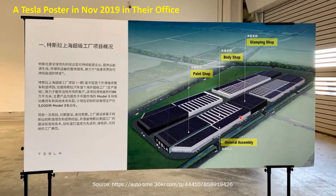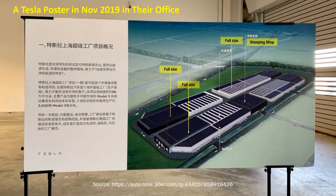There are some interesting details in this poster. They have a very big stamping shop with no similar buildings elsewhere, implying it is a central stamping unit that will serve more than one factory — and that it would be built in phases. This has actually been confirmed: they are now building the third stamping shop. There are also three full-size factories shown, roughly the same size, and a smaller building in the southwest corner where the stamping shop took space — which turned out to become the battery unit and powertrain unit.